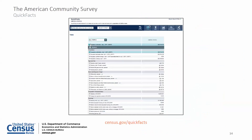QuickFacts is a quick and easy way to access facts about people, business and geography. It provides statistics for all states, counties, cities and towns with a population of 5,000 or more. It's great for making quick comparisons between two geographies. Some topics you can compare are population, age and sex, housing, health, economy, transportation, business and others. You can compare up to five geographies at once.